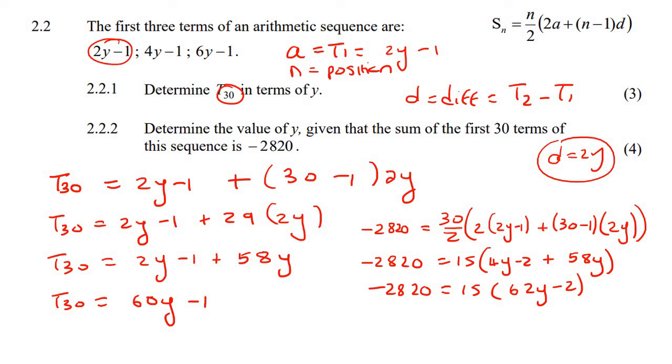And I'm going to multiply, oh, there's different ways you can actually do this, hey? You can multiply the 15 in if you want. But I'm going to be cool, and I'm going to divide by 15 on the other side. So I'm going to divide this 15 onto the other side. So it would look like this. And then we're still stuck with 62y minus 2.